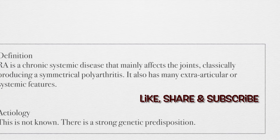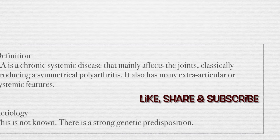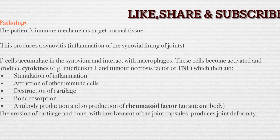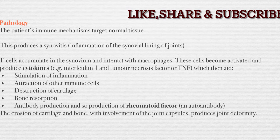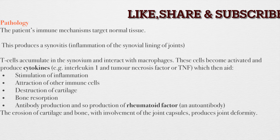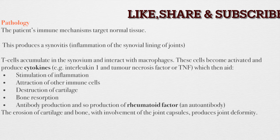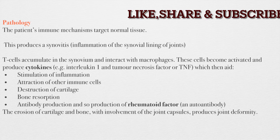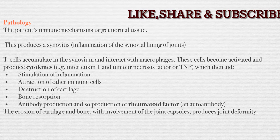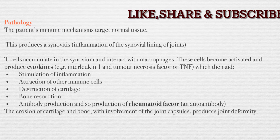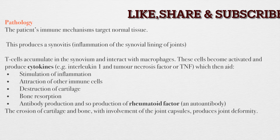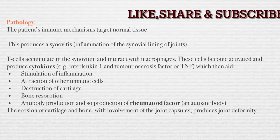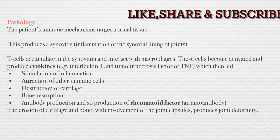The etiology is unknown, but there is a strong genetic predisposition and it is more commonly found in females. The pathology is autoimmune — the body's self-defense cells target the cells of the cartilage or synovial membrane, leading to destruction and production of cytokines, which stimulate inflammation. This process destroys the cartilage, bone, and joint capsule, producing joint deformities and joint pain. Antibodies are produced, including the rheumatoid factor antibody, which is diagnostic of this disease.